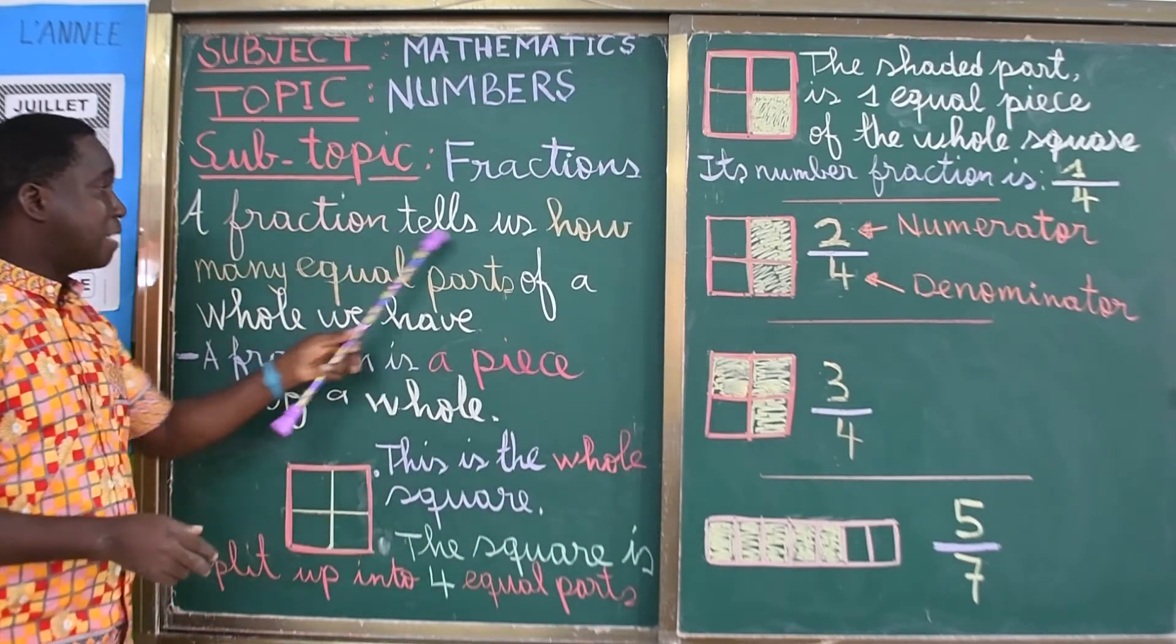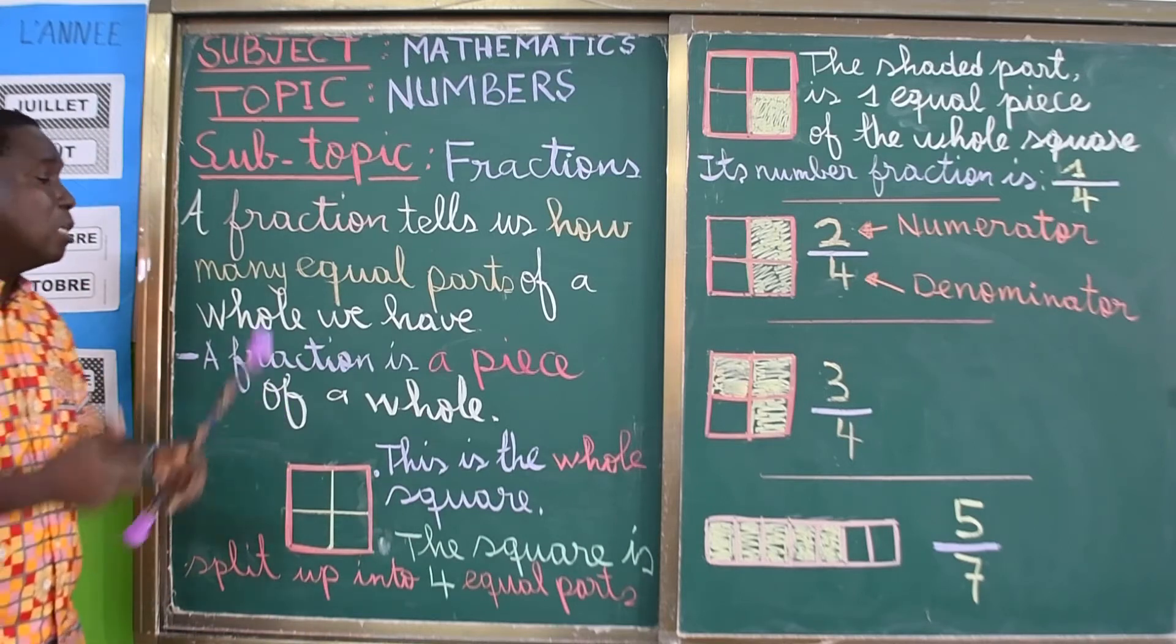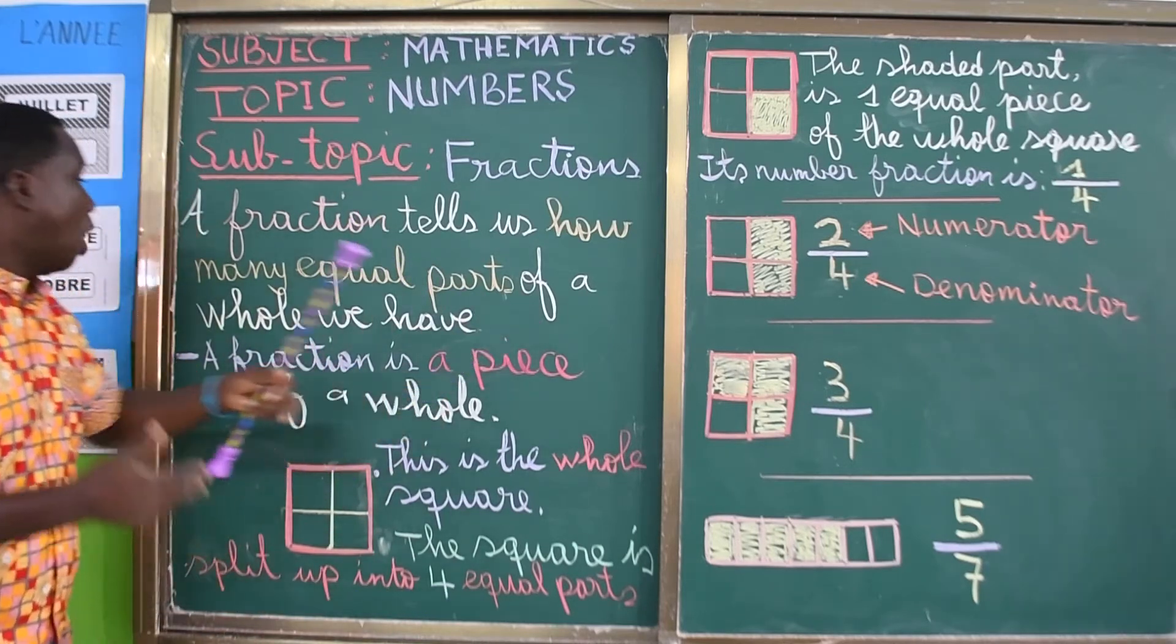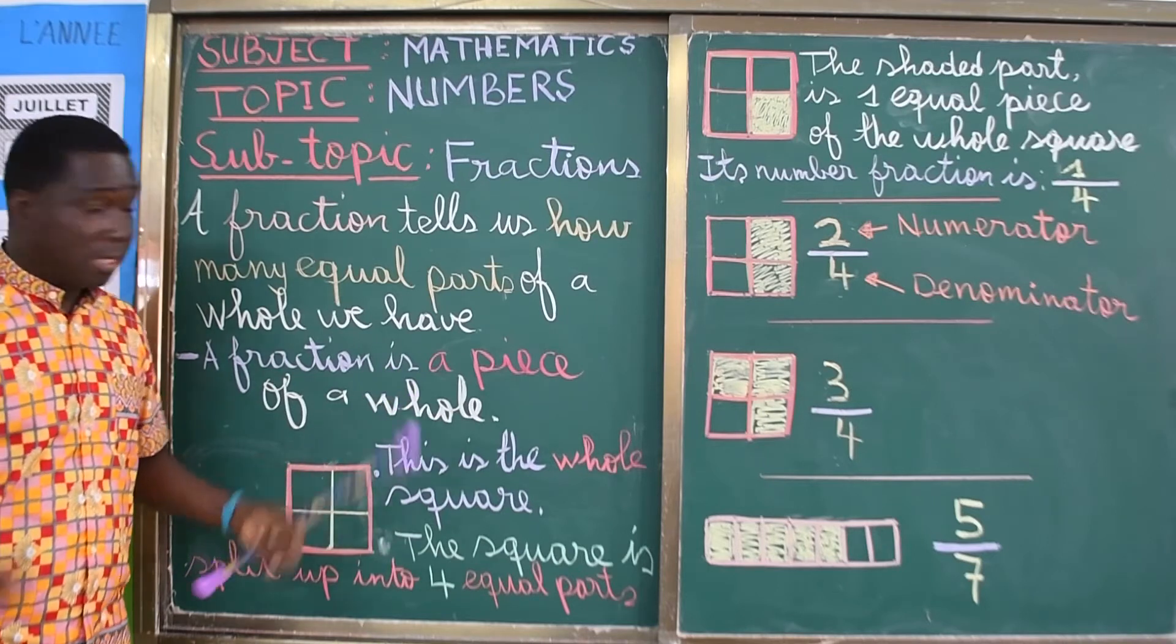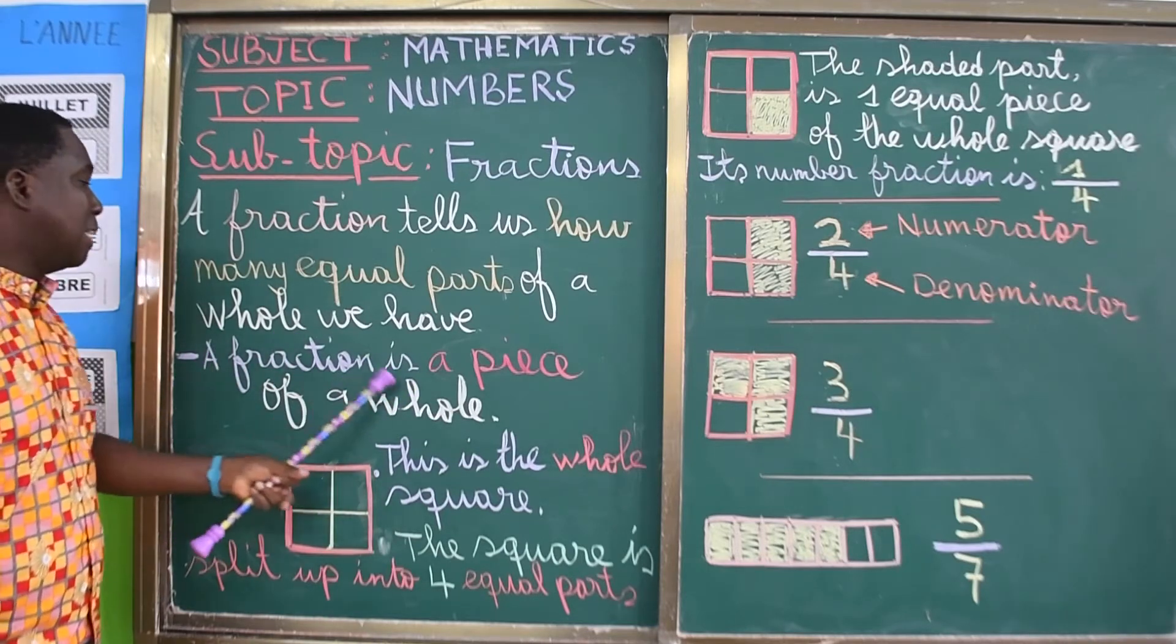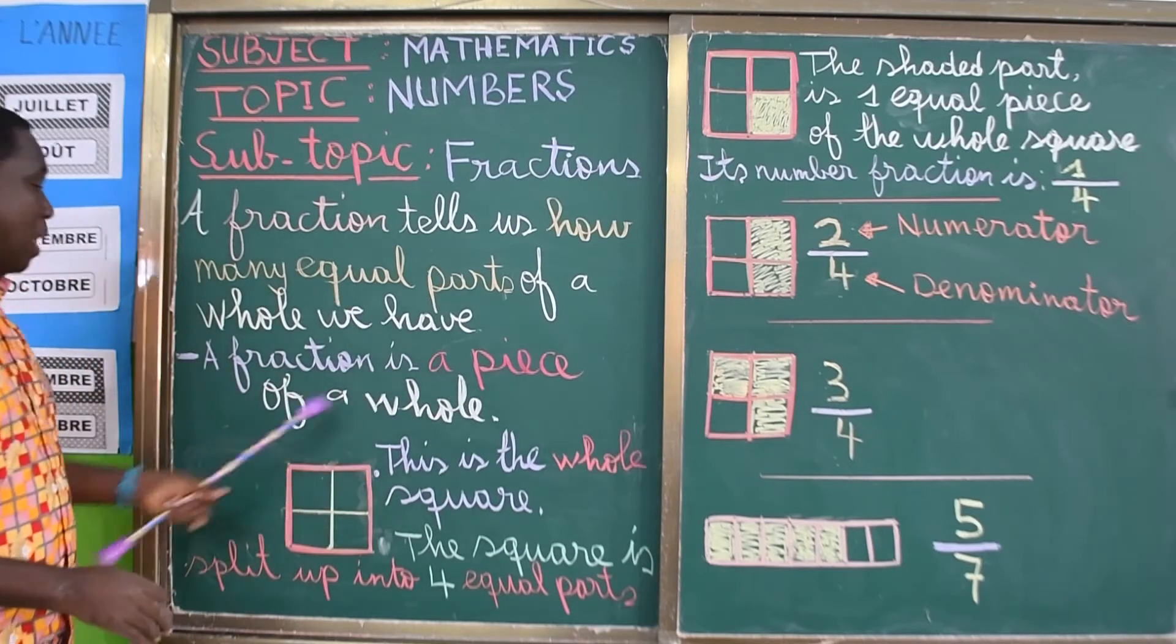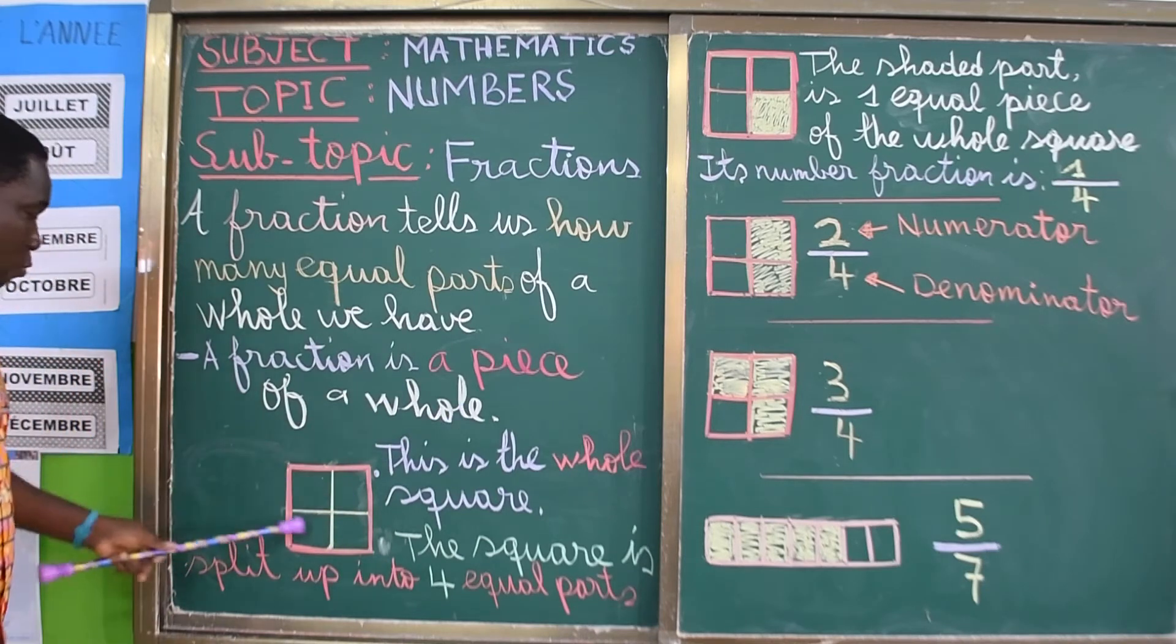So a fraction tells us how many equal parts of a whole we have. A fraction is a piece of a whole. Look at this square here.